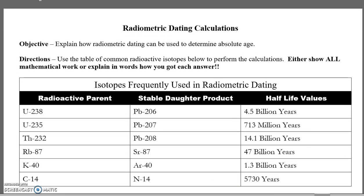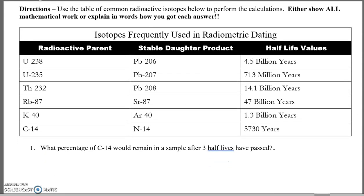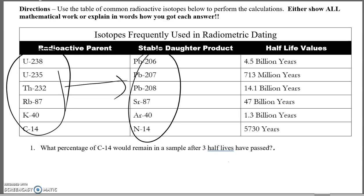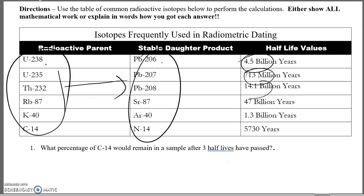On this sheet, a couple of important things. As we learned in class, we have some elements that are radioactive and they decay to a stable daughter. Each of these pairs has a different half-life. For example, uranium-238 decays to the daughter lead-206, and one half-life takes 4.5 billion years. This chart is really important because it tells you the half-life of each of the parent-daughter pairs.